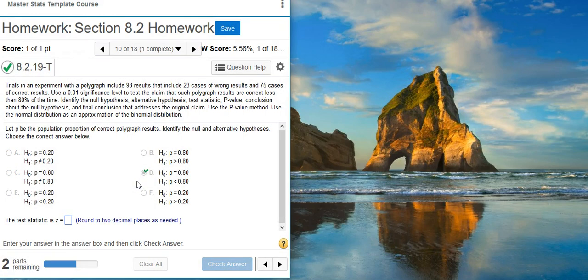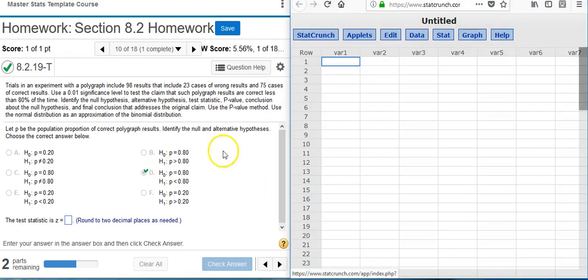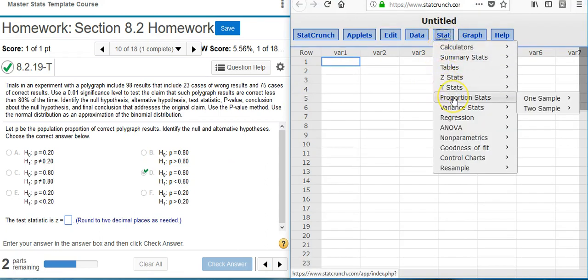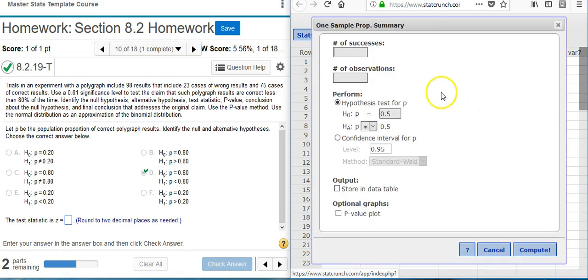Now the next part of our question asks us to identify the test statistic. To do this, we're going to use StatCrunch. So I'm going to pull up StatCrunch here, and inside StatCrunch, I'm going to go to Stat, Proportion Stats, because I'm looking for proportions, one sample, because I'm only given one sample, and with Summary, because I don't have actual data, but I do have some summary statistics in the problem statement.